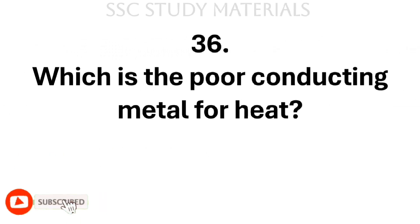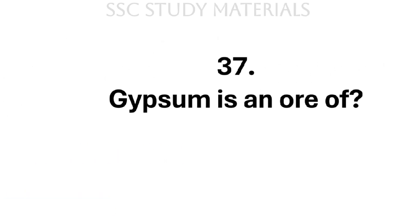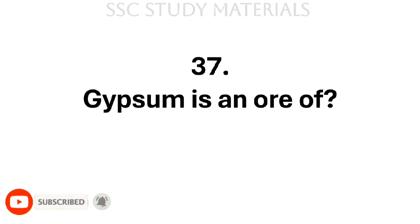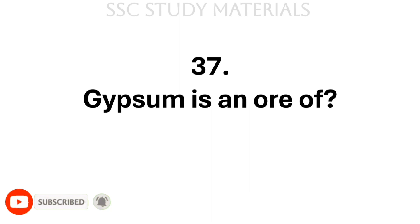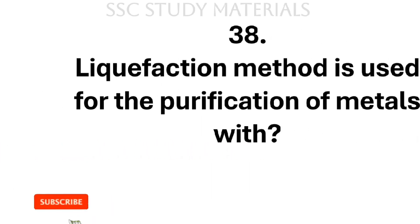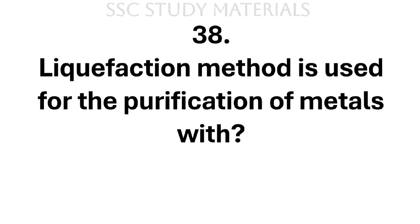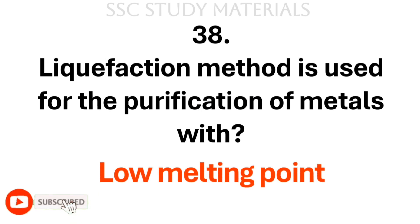Question No. 36: Which is the poor conducting metal for heat? Answer: Lead is the poor conductor. Question No. 37: Gypsum is an ore of? Answer: Calcium. Question No. 38: Liquefaction method is used for the purification of metals with? Answer: Low melting point.